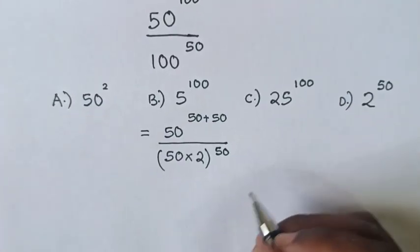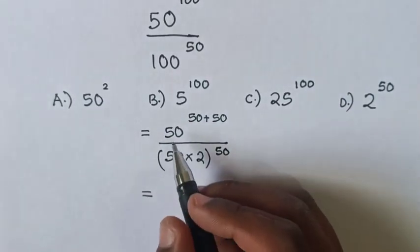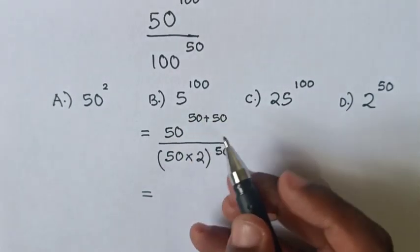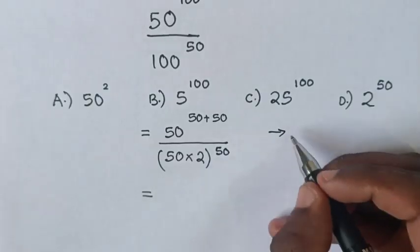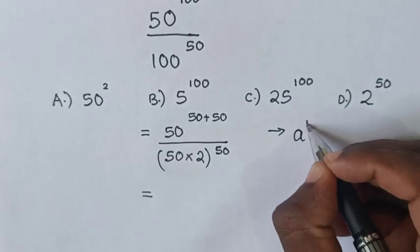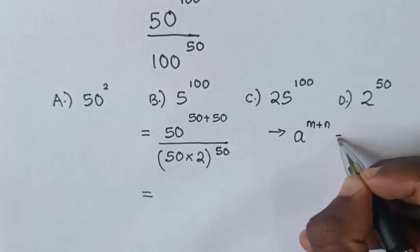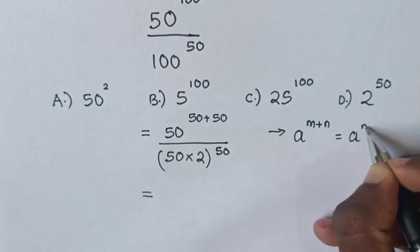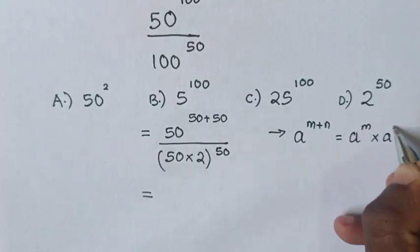Then, from the numerator, we will apply the exponential rule that A^(M+N) equals A^M times A^N.